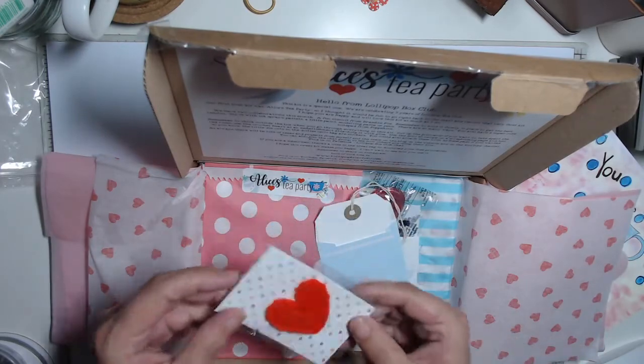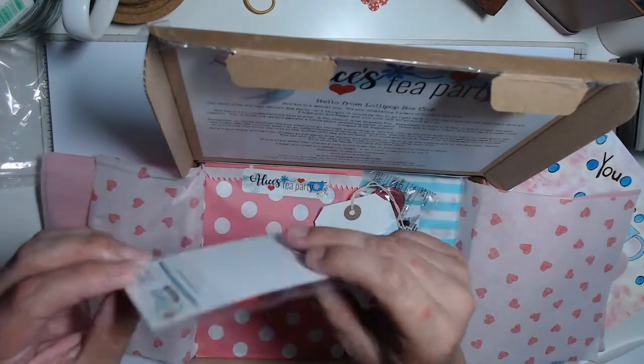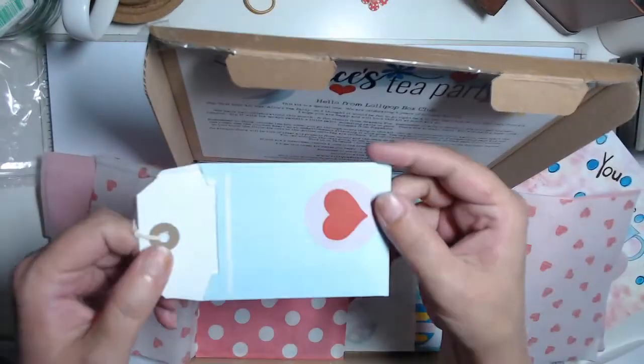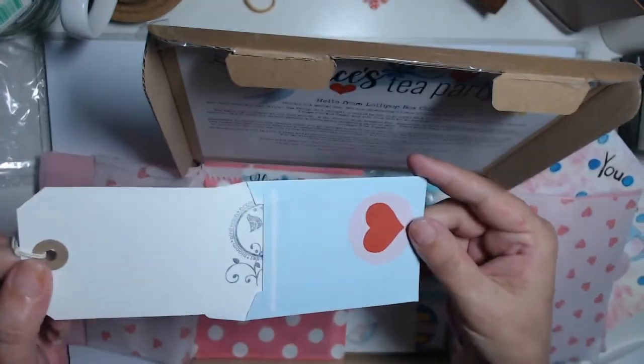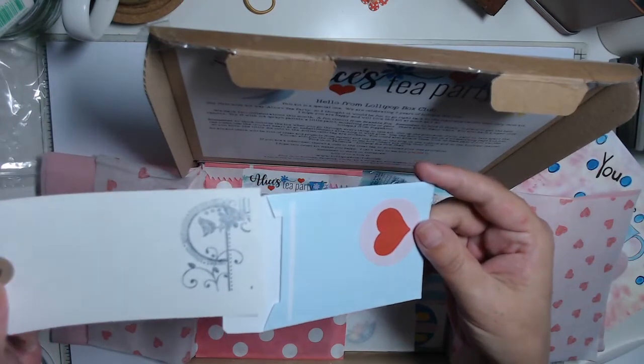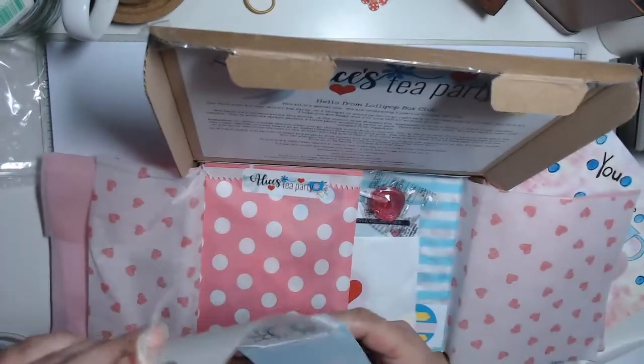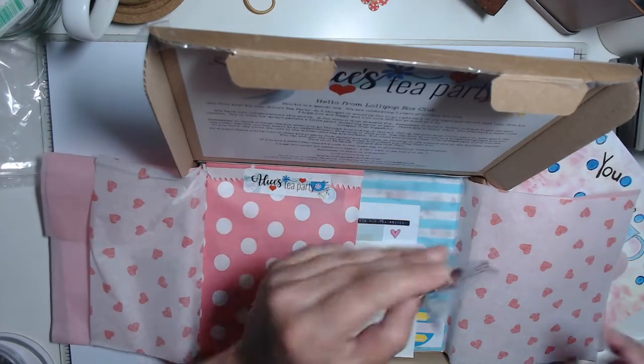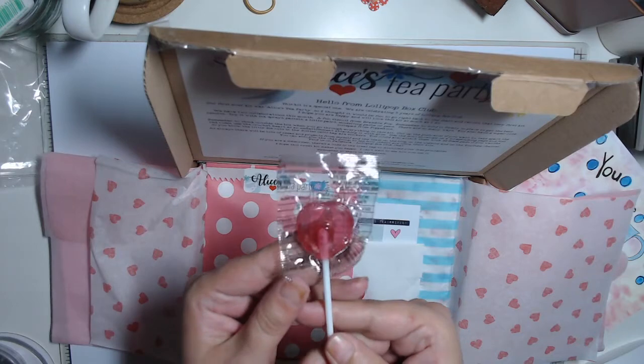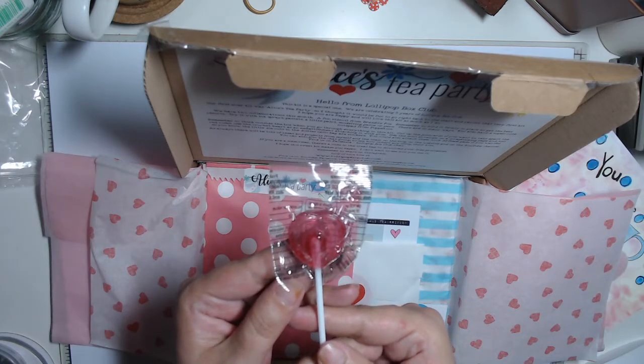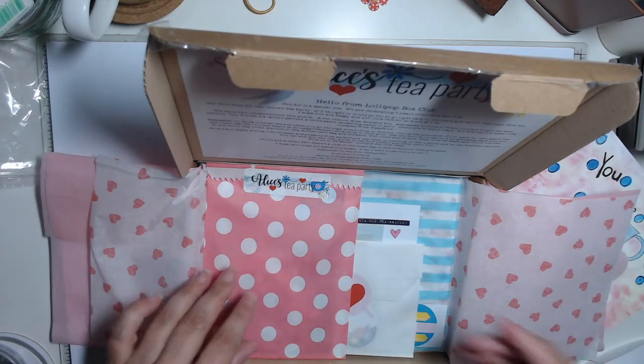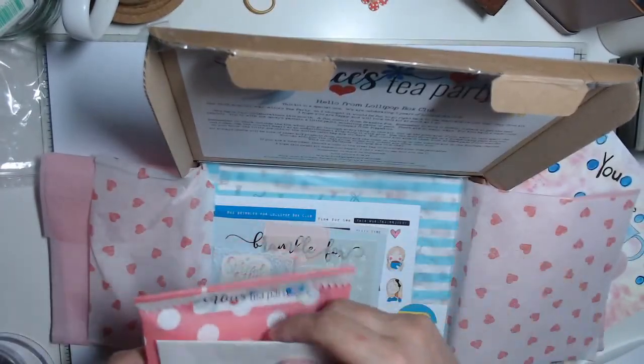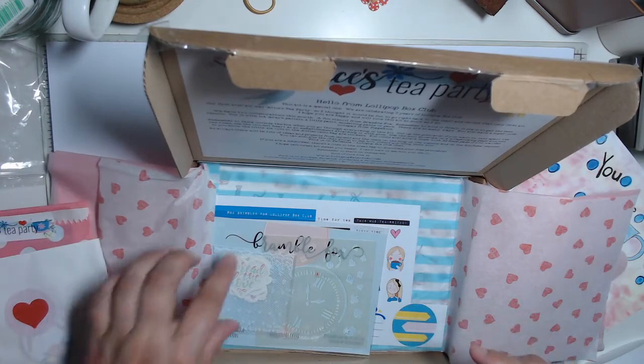And then we've got a crochet heart. And then we've got a bag. Oh, that's got something on it. Of course we'd have a lollipop, because it wouldn't be one without one. So like I say, this is all Alice in Wonderland themed. So we've got a little bag there. We'll pick those out and do them separately.